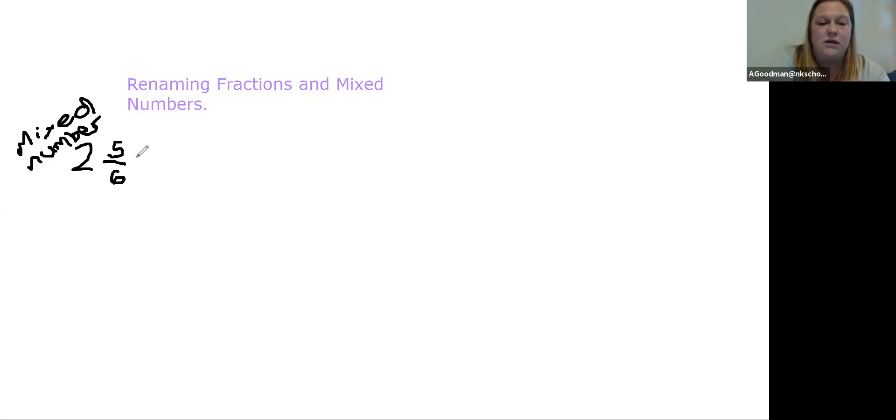So if we are trying to rename this mixed number as a fraction, the first thing we need to do is take how many, we have to think about there's sixths, right? This is the denominator is sixths. So how many sixths make up two wholes? Well, we know that six sixths makes up one whole, right? And so we have two wholes in that. So that's another six sixths. And we have the fraction five sixths.